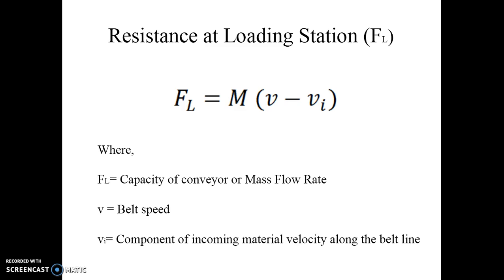The next force is resistance at the loading station, FL. FL is given by M · (V − Vi), where M is the mass of material carried over the belt, V is the belt speed, and Vi is the component of the incoming material velocity along the belt line — i.e., the velocity of material introduced onto the belt from the hopper or feeder. If these values are given in the problem, both must be considered. Otherwise, only belt speed is used and Vi is taken as zero. This is an optional type of load.